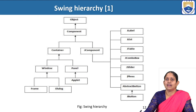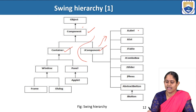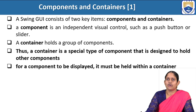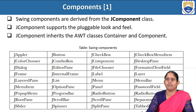In the Swing hierarchy, every component is derived from the Object class. The Component class has two parts: the Container and the JComponent — the JComponent part forms the Swing. Under JComponent there are Label, JList, JTable, JComboBox, JSlider, etc. The Swing GUI consists of two items: components and containers. A component is an independent visual control such as a push button or slider, and a container holds a group of components. For a component to be displayed, it must be held within a container. All Swing components are derived from the JComponent class, which supports pluggable look and feel and inherits the AWT classes Container and Component.